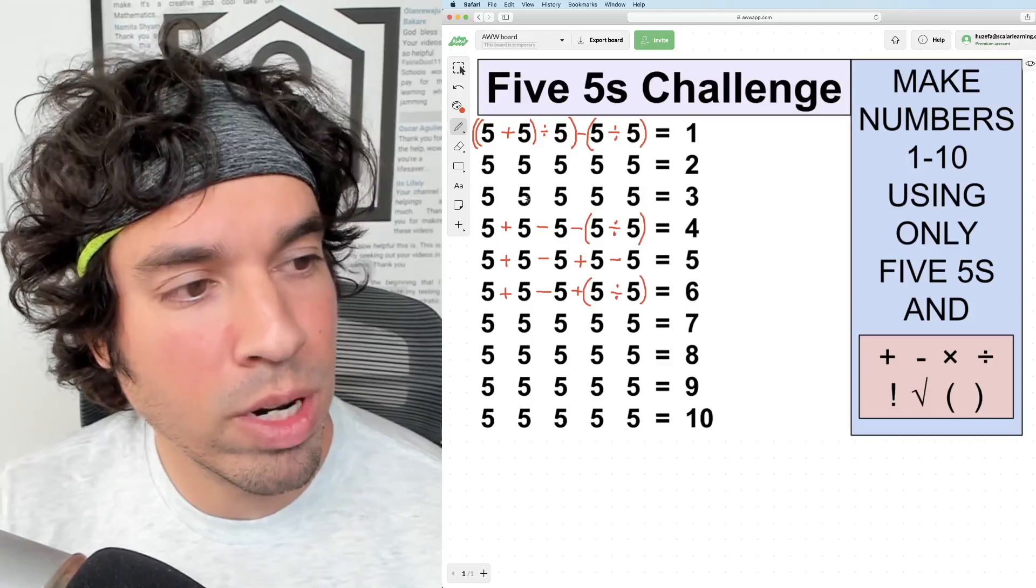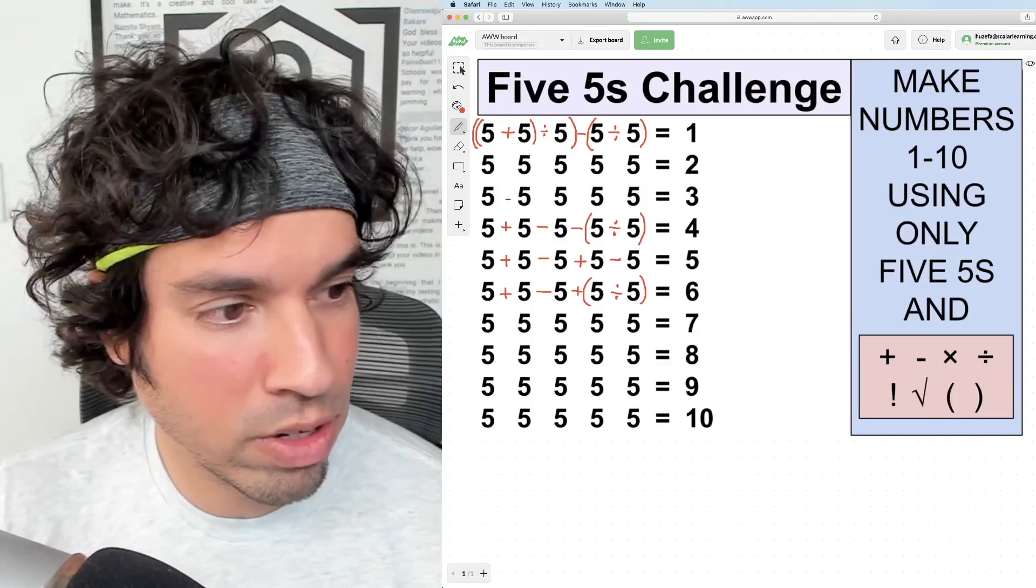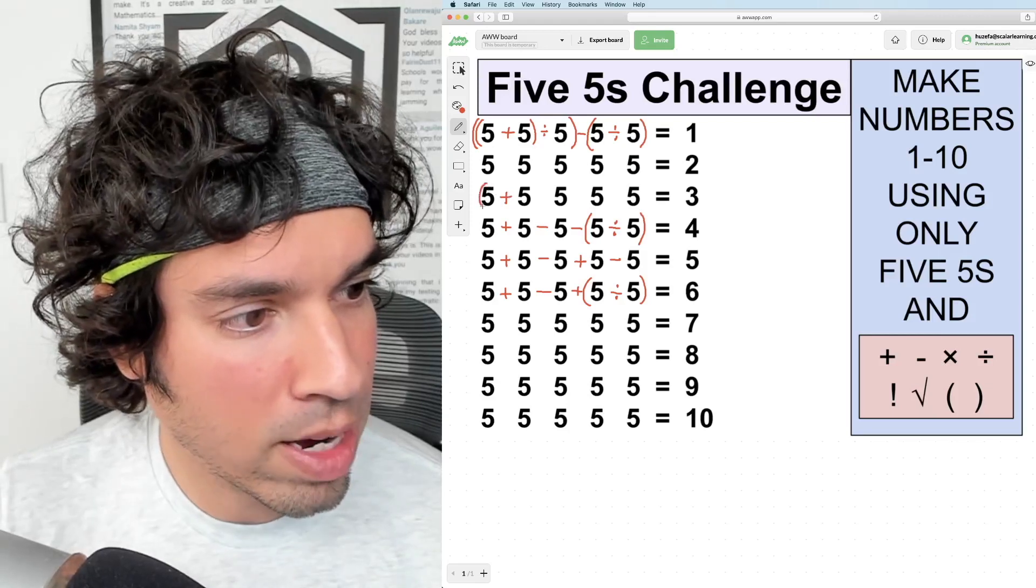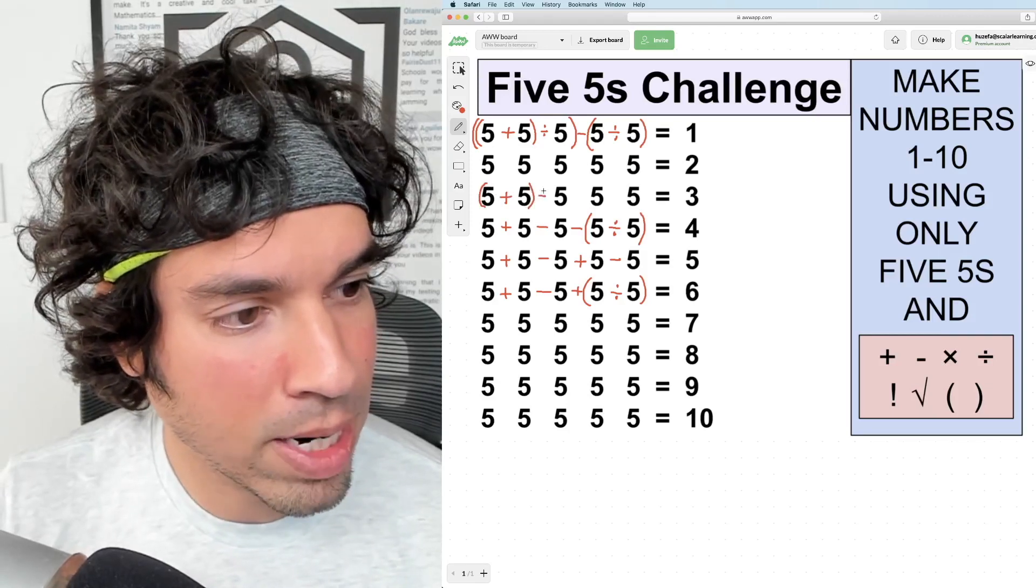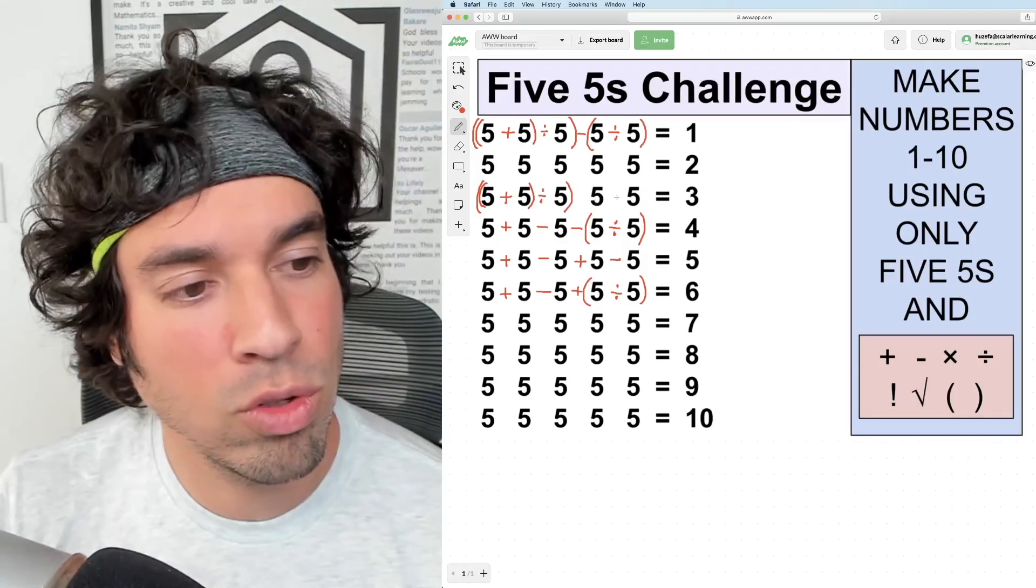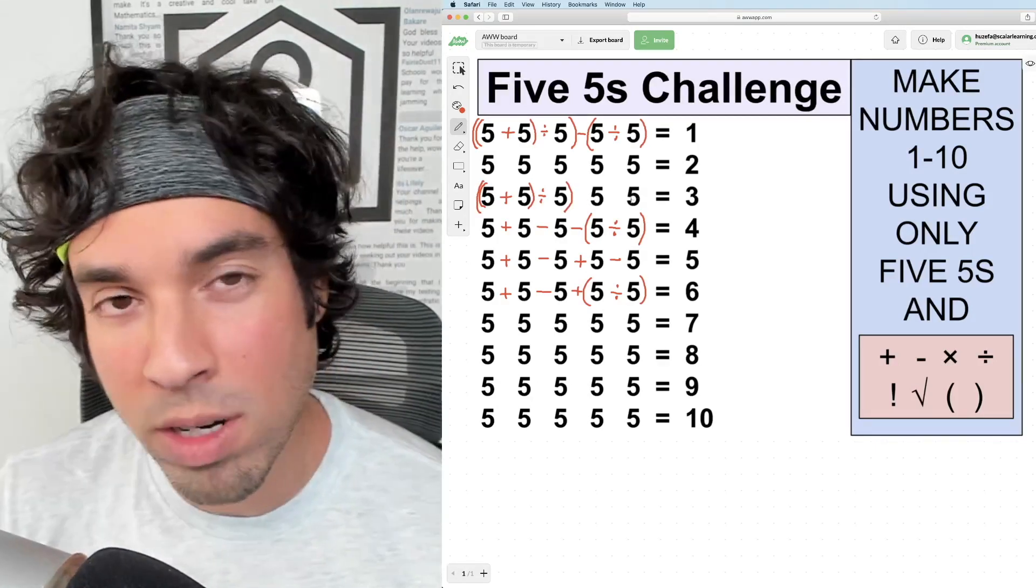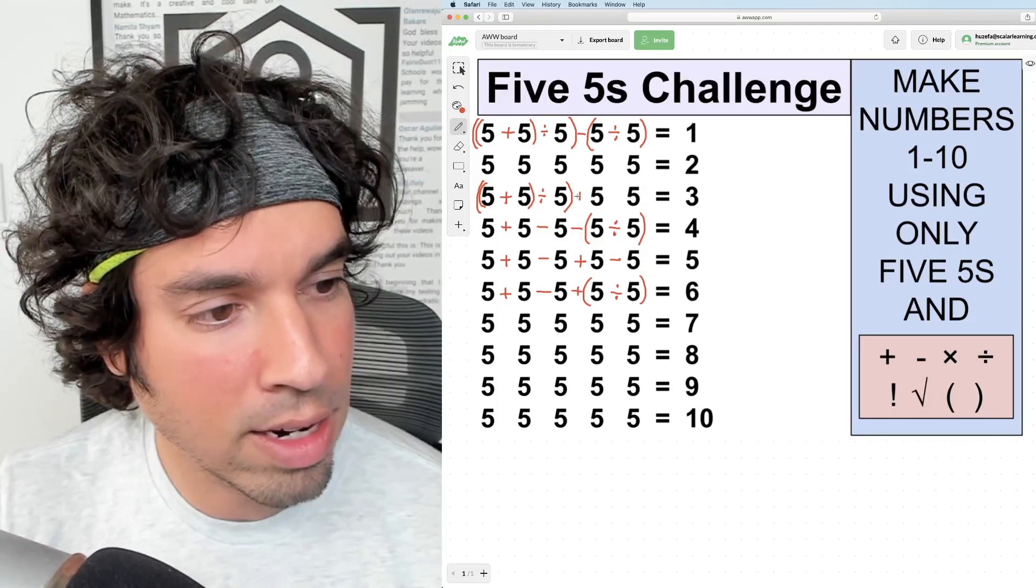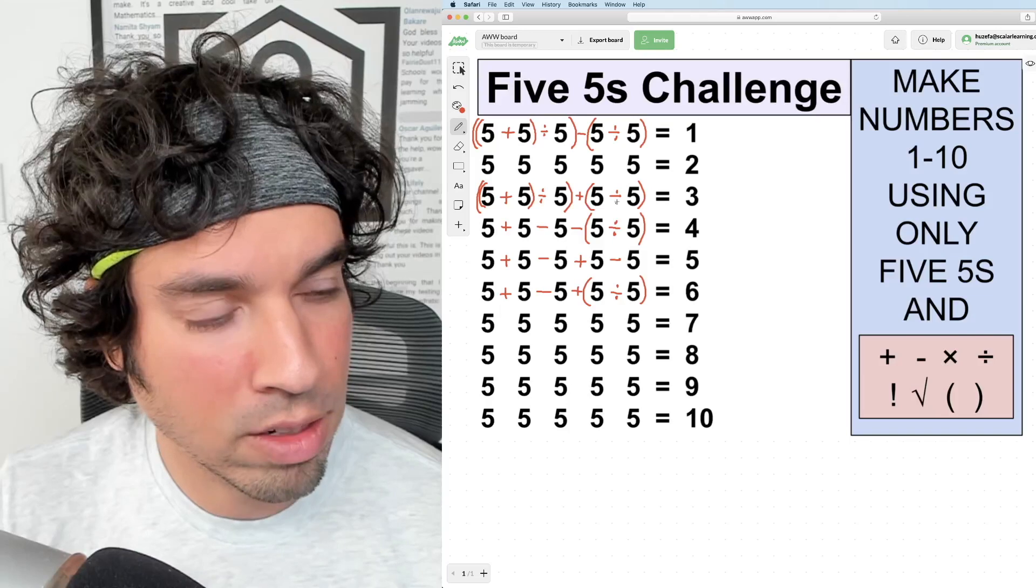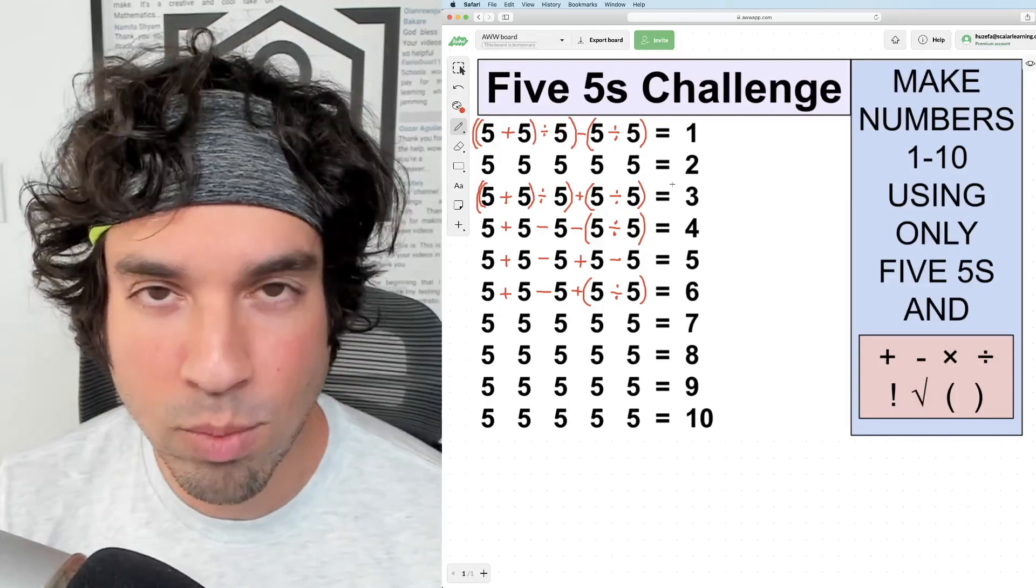Now I'm going to go back to three. And the reason why is because it connects with one very nicely. So I'm going to do exactly what I did with one. I'm going to add those two fives together. Then I'm going to divide by those fives. Now we're going to be at a two. Ten divided by five is two. And now instead of subtracting the one to get to one, I'm going to add that one and we finish at two plus one is three.